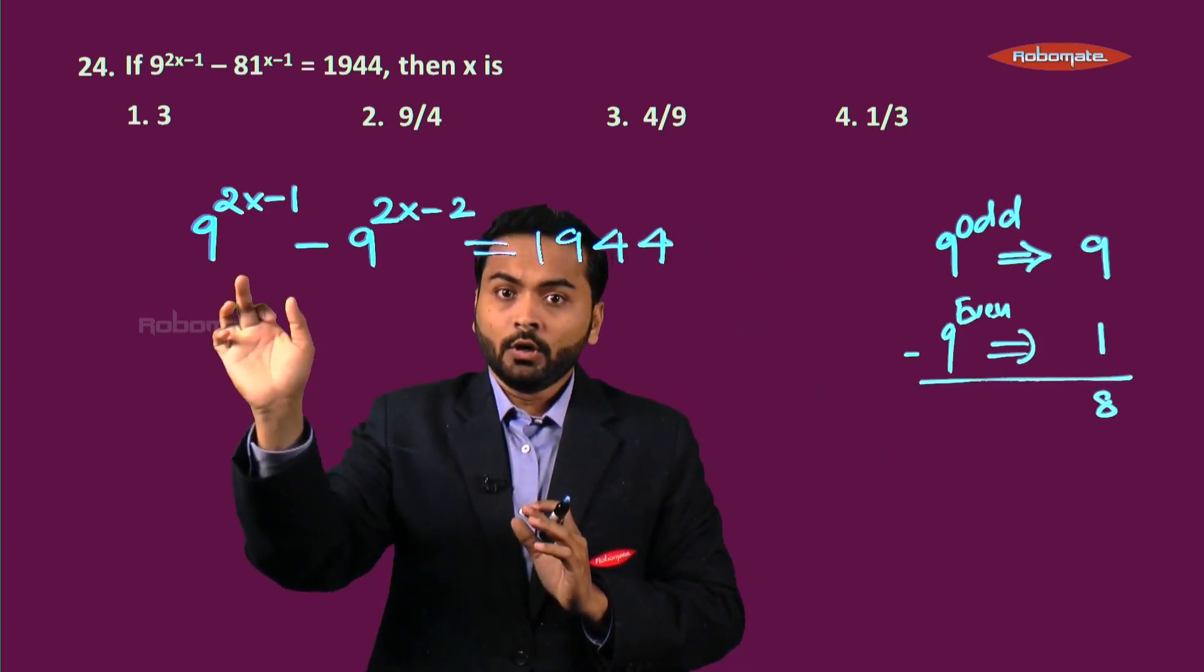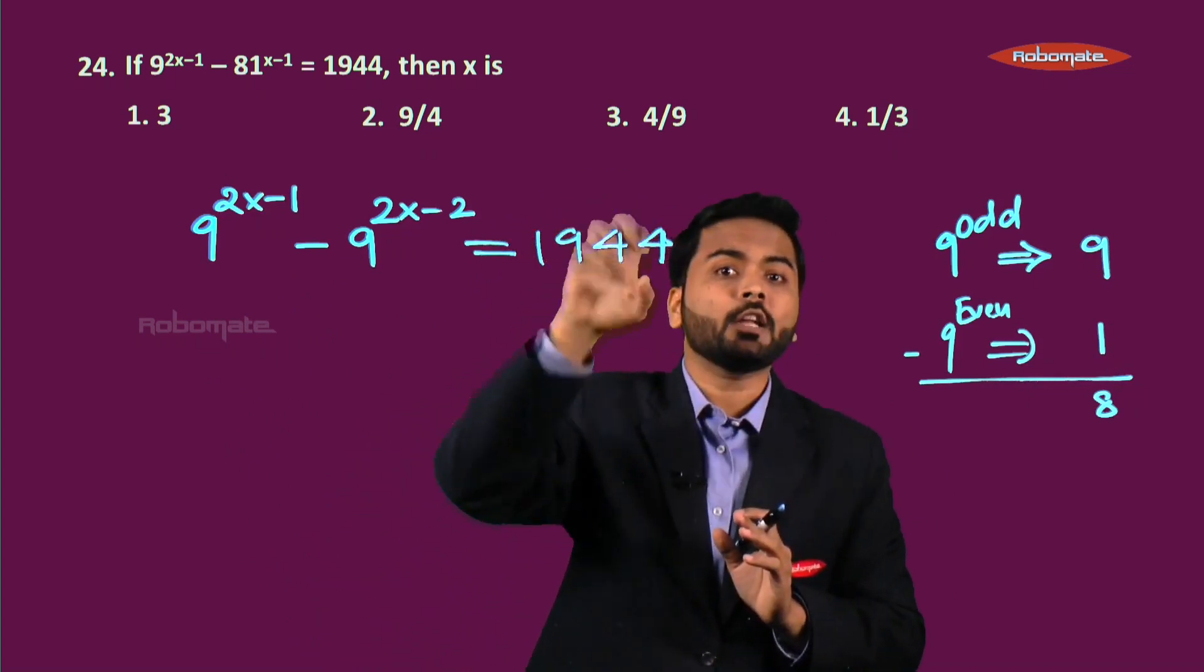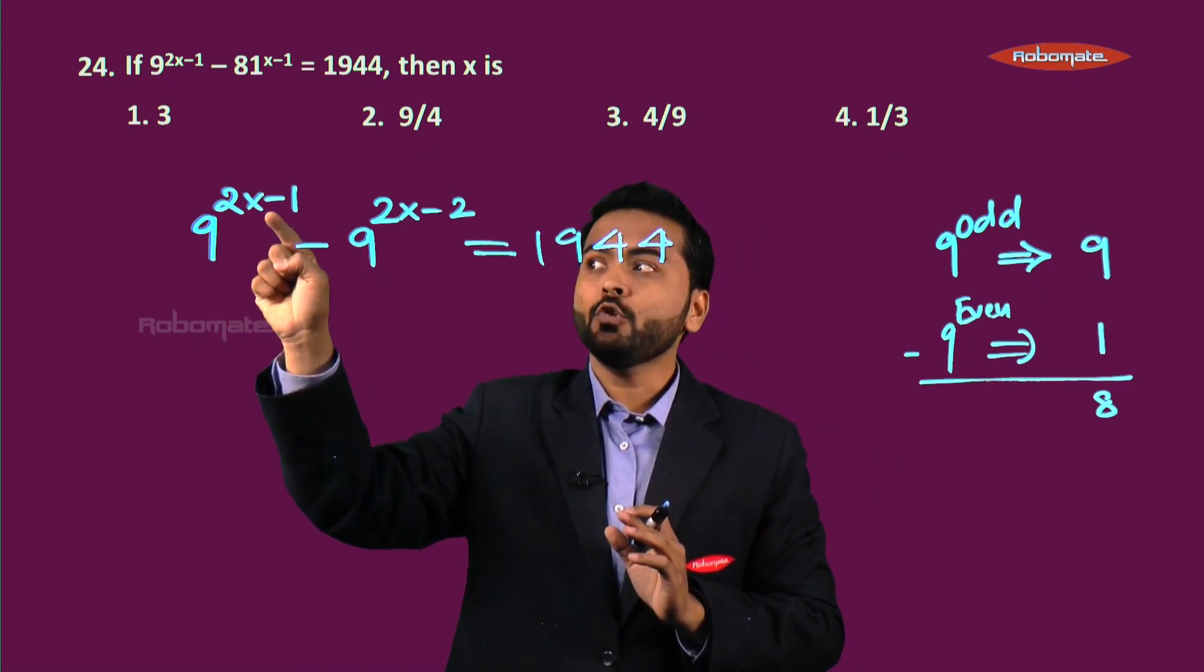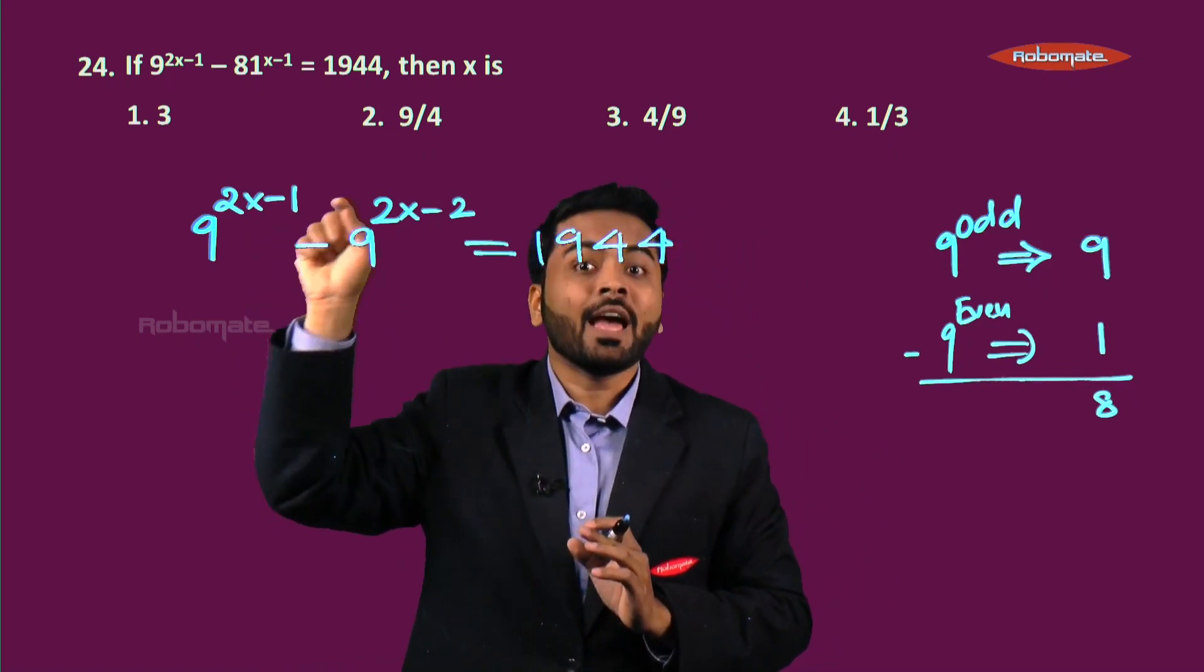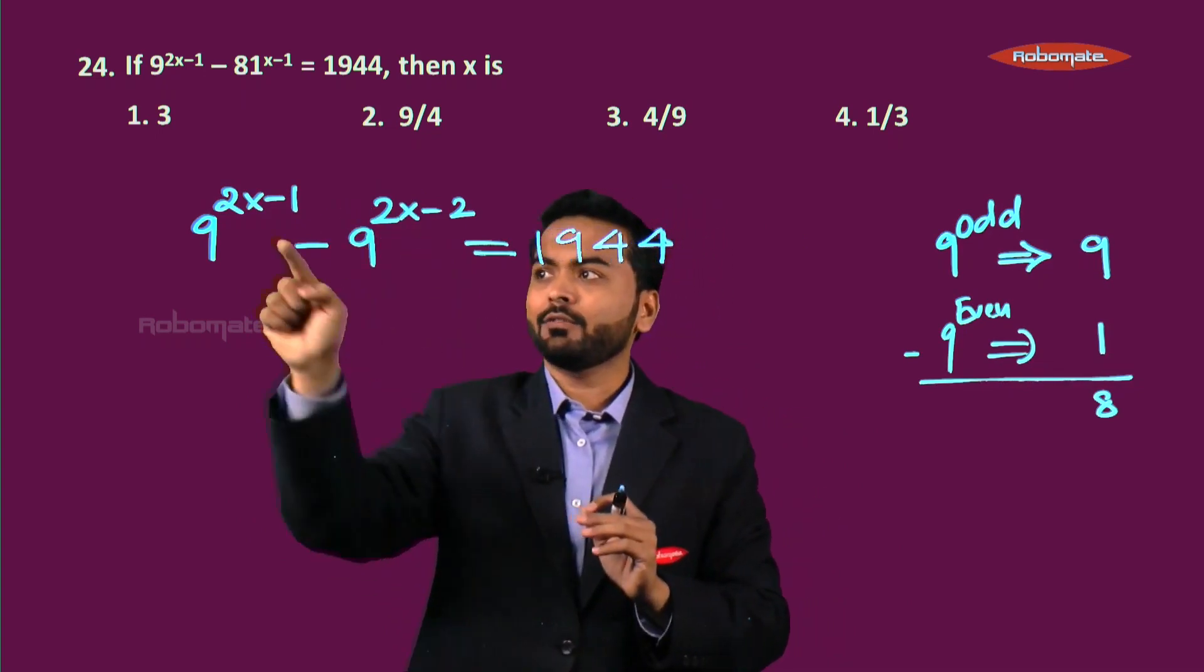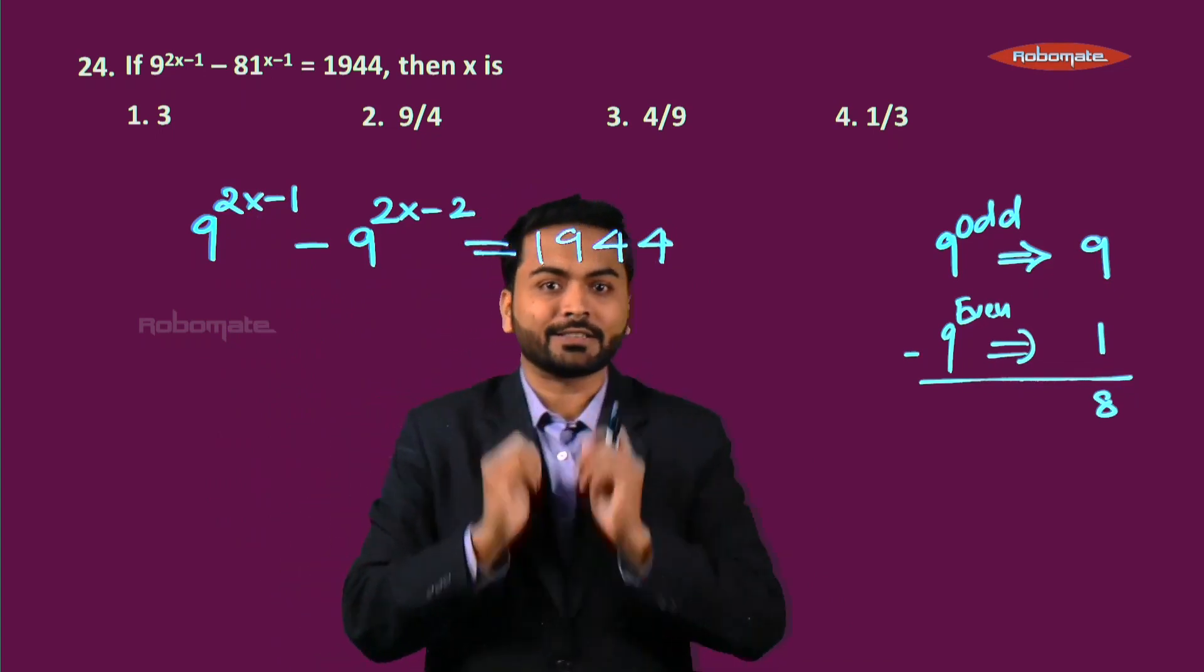Now the difference of two consecutive powers is a big number, which means the value of x has to be more than 1. Let's take, say, 4 by 9, which is the third option, just for your understanding. Now 2 into 4 by 9 is 8 by 9, 8 by 9 minus 1 is minus 1 by 9. So that becomes a fraction.